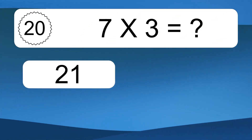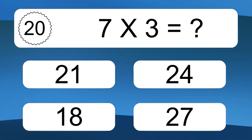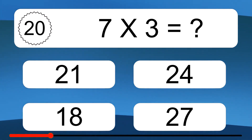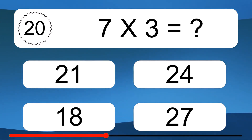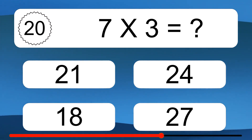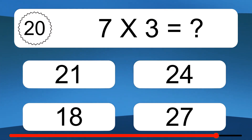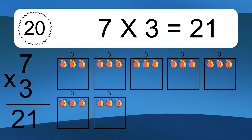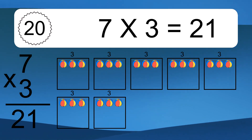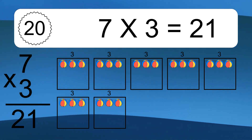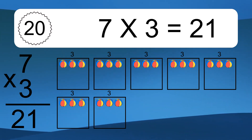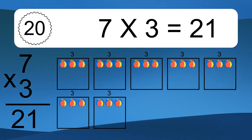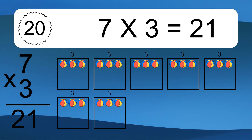Seven times three equals what? Seven times three equals 21. We have 7 boxes, and each box has 3 colorful balls inside. If you count all the balls in all the boxes together, you will have 7 times 3 balls. This equals 21 balls.